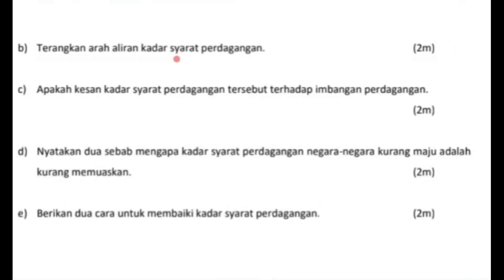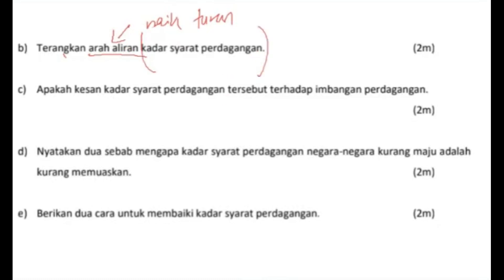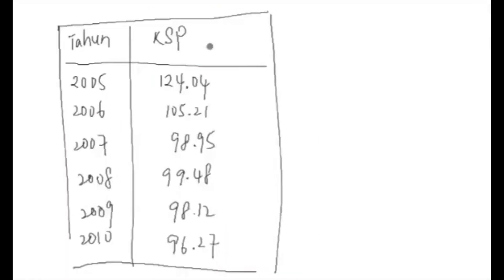Sekarang kita akan teruskan dengan soalan B: Terangkan arah aliran. Kalau anda nampak perkataan arah aliran, ini menunjukkan dia nak anda bincangkan sama ada dia naik ataupun dia turun berkaitan dengan KSP yang kita telah hitung tadi. Jadi sekarang anda cuba tengok jadual dia dulu, tentukan KSP dia meningkat ke atau menurun, daripada tahun apa ke apa.